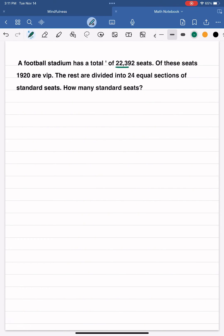Now our next problem: A football stadium has a total of 22,392 seats. Of these seats, 1,920 are VIP. The rest are divided into 24 equal sections of standard seats. We need to figure out how many standard seats.